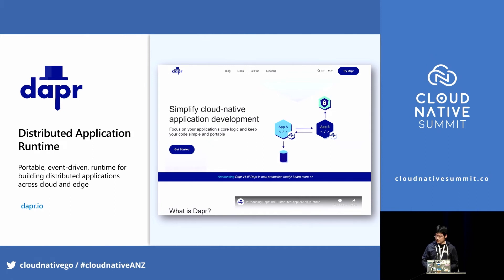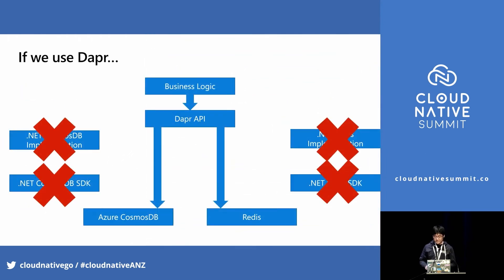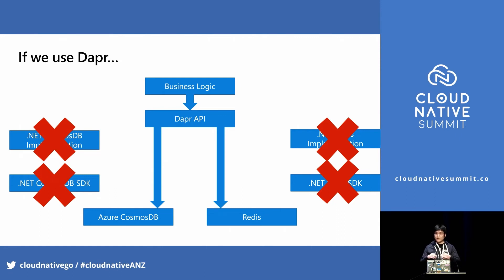That leads us to our topic: Dapr, or Distributed Application Runtime. It is a new way to build distributed applications. For the shopping cart service example, with Dapr we can remove all the dependencies for DynamoDB or CosmosDB. We just call the Dapr API, and Dapr will call the underlying CosmosDB or whatever component is configured. That's an abstraction layer between our application and the cloud native service. Your application is now portable — if you want to support another platform, you just update the Dapr configuration and don't need to change your code.